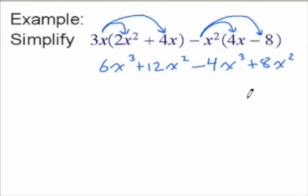And then just combine like terms. So here we have 6x cubed minus 4x cubed. That'll be 2x cubed. And 12x squared plus 8x squared is going to give us 20x squared.